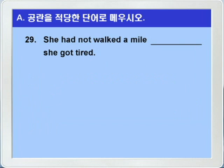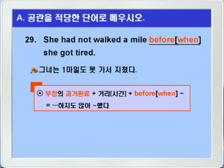29번입니다. She had not walked a mile blank she got tired. 이 문장은 우리가 4장 시제에서 과거 완료를 공부할 때 이미 나온 문장이에요. 그녀는 1마일도 못 가서 지쳤다. blank에는 before나 when이 들어가면 되겠습니다. 부정의 과거 완료 다음에 거리나 시간을 나타내는 말이 나오고 그 다음에 before 혹은 when이 되면, 뭐뭐하지 않아서 before나 when이야 했다, 이런 의미가 됩니다. She had not walked a mile before she got tired. She had not walked a mile when she got tired.